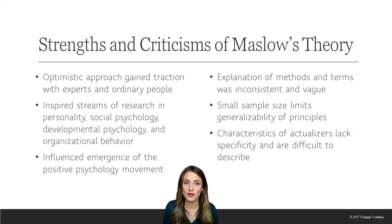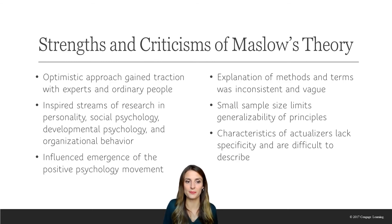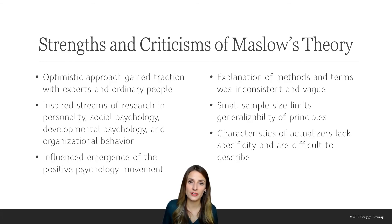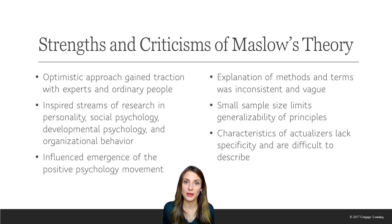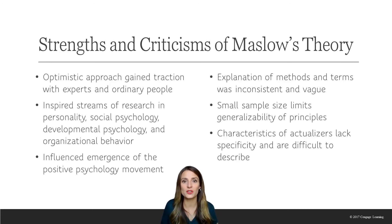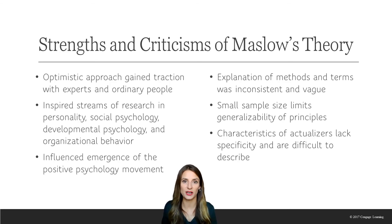Now let's explore some of the strengths and weaknesses of Maslow's theory. First and foremost, his ideas were more optimistic than those proposed by other theories at the time. In the 1960s and 1970s, humanistic psychology became more popular, and Maslow's theory contributed to that increase in popularity. His theory resonated with experts and ordinary people alike, and sparked a lot of interest in personality, social psychology, developmental psychology, and even organizational behavior. He also promoted positive psychology with his humanistic perspective — positive psychology would come later in the 1900s.